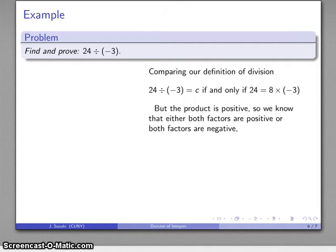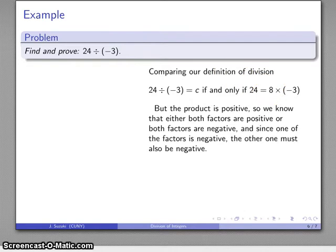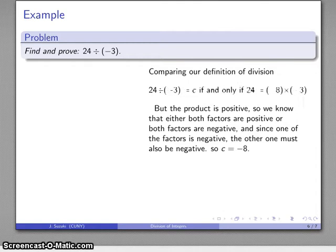Because I want a positive product, I want to make sure that the two factors are going to both have the same sign. Well, I'm stuck with this negative 3 that emerged from the problem, which means that I have to change the sign of the 8. So that tells me that 8 is going to be another factor which must also be negative, so my c value has to be negative 8.